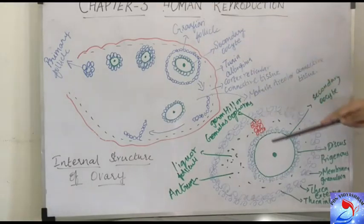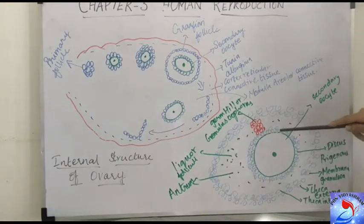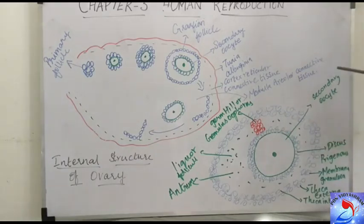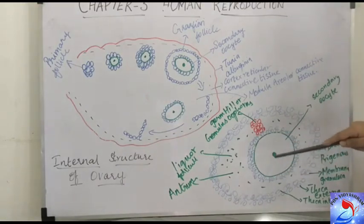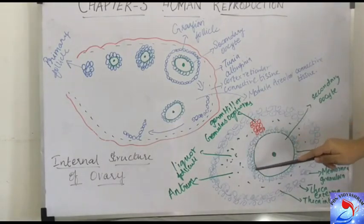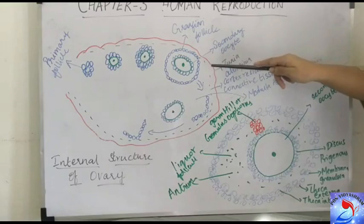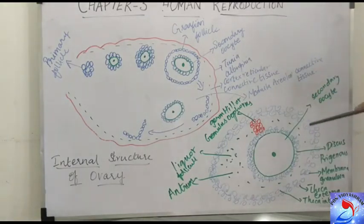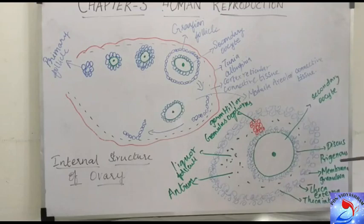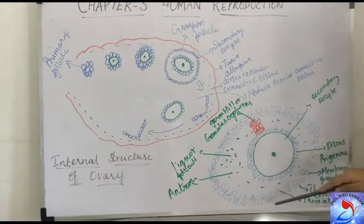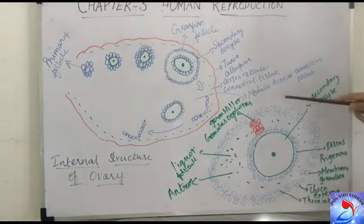In the detailed structure of the Graafian follicle, the center is the secondary oocyte which gives rise to the ovum. The secondary oocyte is surrounded by two layers of follicular cells. The layer closest to the secondary oocyte is called the discus proligerus, and surrounding that is another layer of follicular cells called the membrana granulosa. The outer layer surrounding the ovum is called the tunica albuginea.